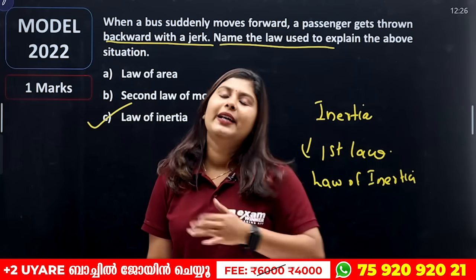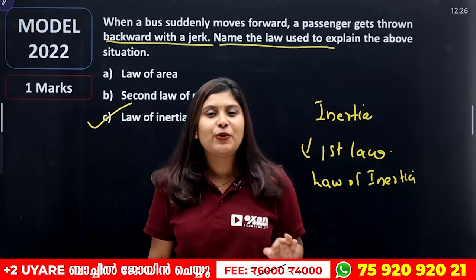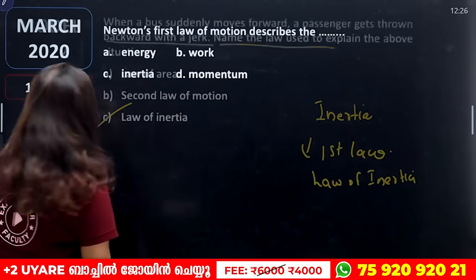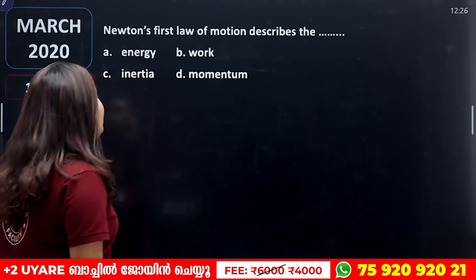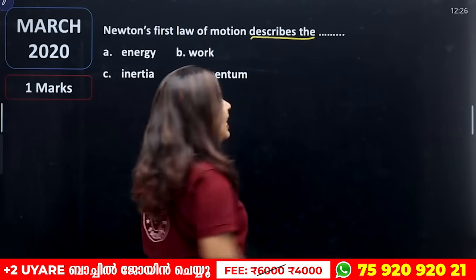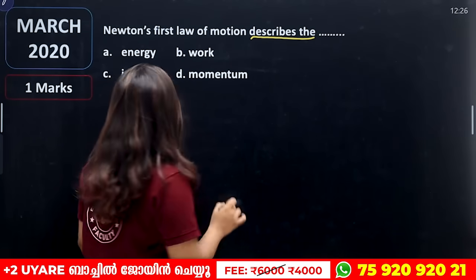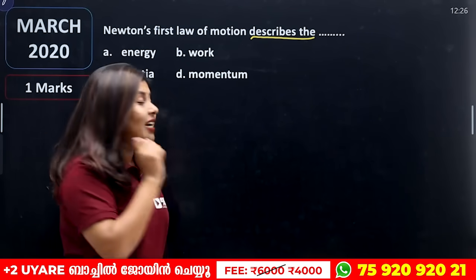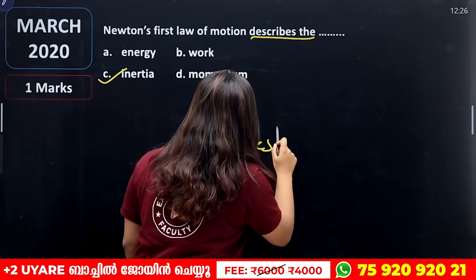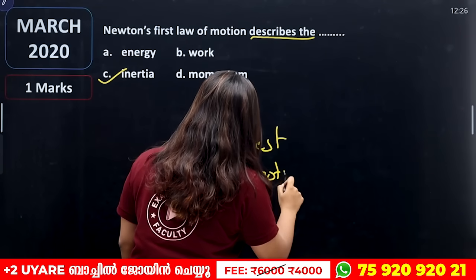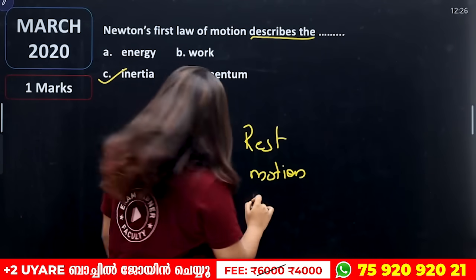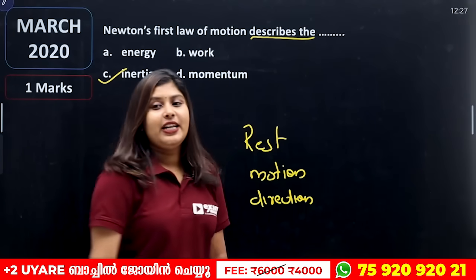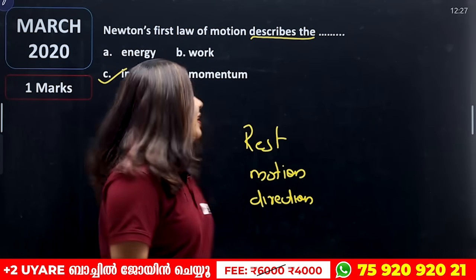What is the first law of inertia? The first law of motion describes Newton's first law. Inertia can be described in two ways: inertia of rest, inertia of motion, and inertia of direction.